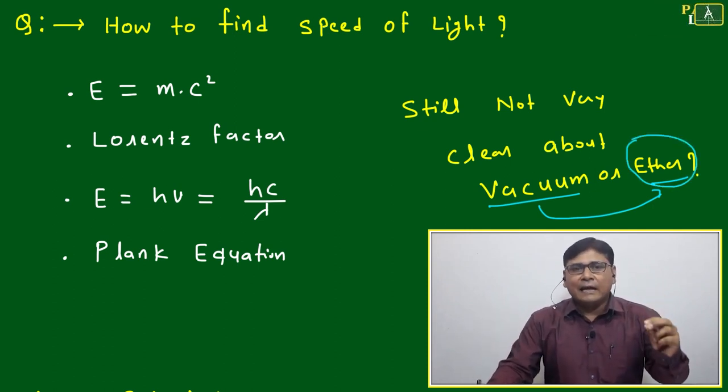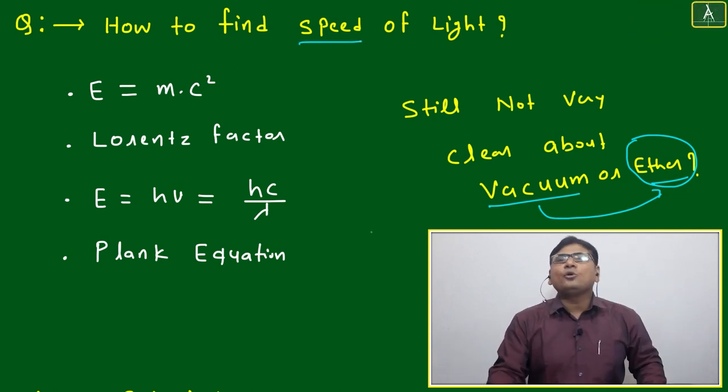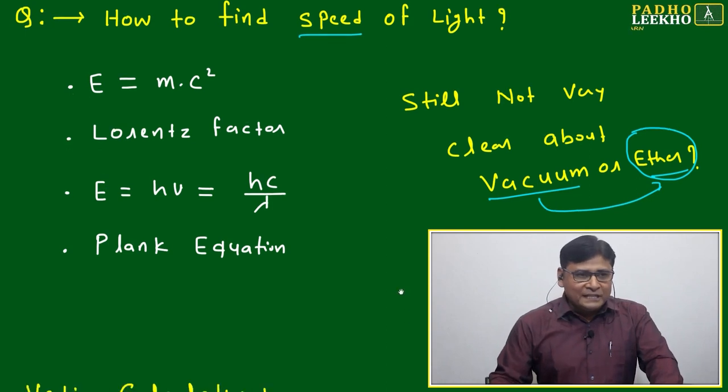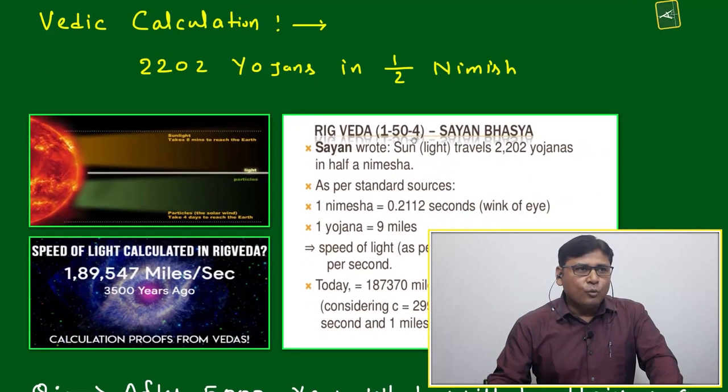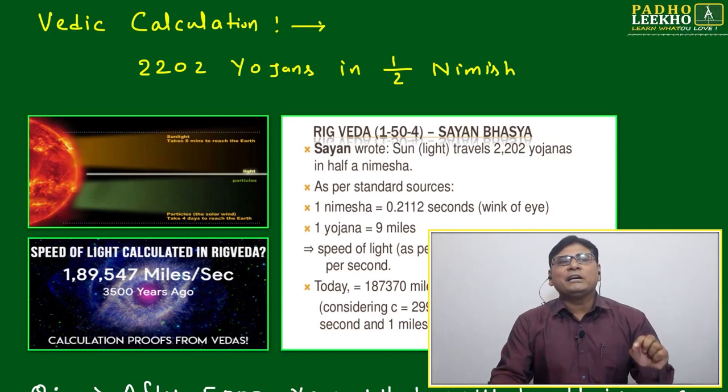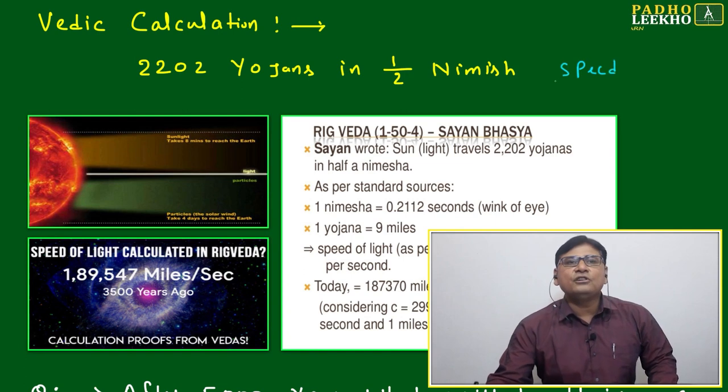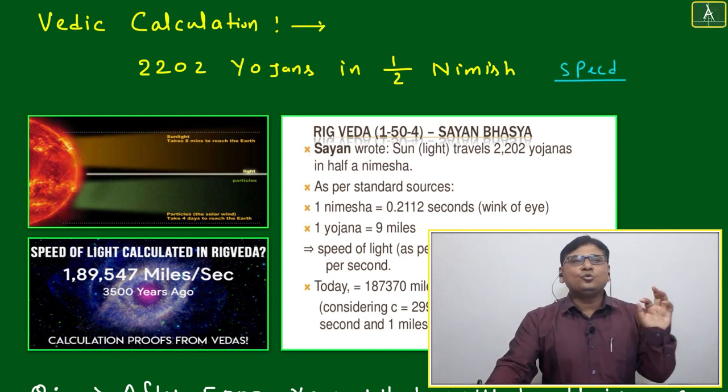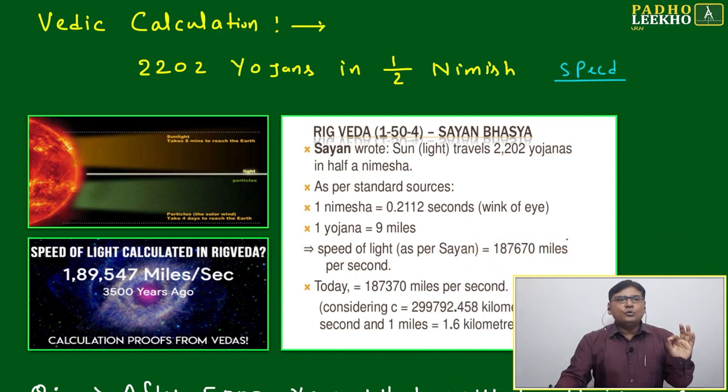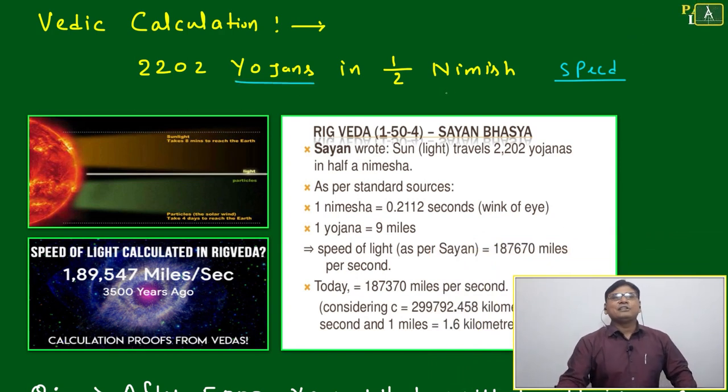These basic questions we are not able to handle, but through Vedic math, thousands of years before, one simple statement: 2,202 yojanas in half a nimish. That is your speed of light. Only one line: 2,202 yojanas in half a nimish. Now the only thing is we should understand what is yojanas and what is nimish.